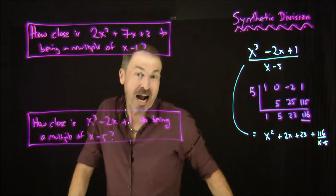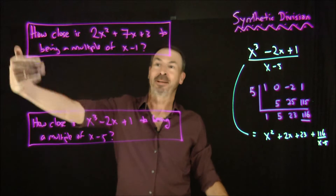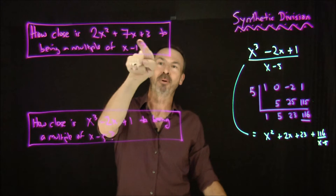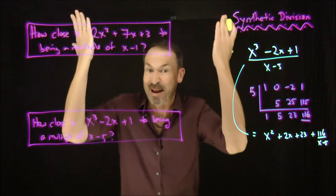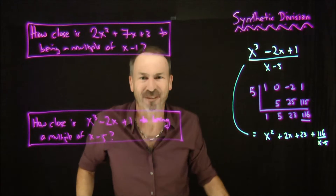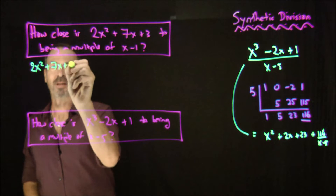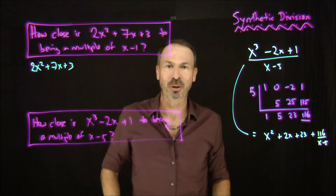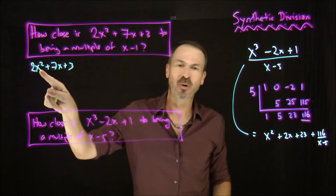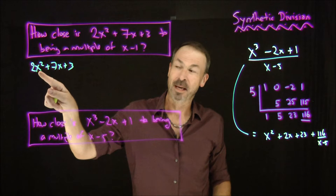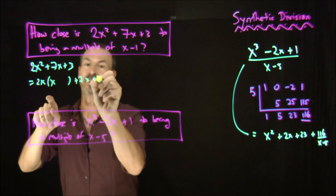I don't see these questions presented this way in a textbook at all — I think they should be. Going on the theme of integer rectangles, here's question one: how close is the polynomial 2x² + 7x + 3 to being a multiple of (x minus 1)? It probably isn't because I just made it up, but how close is it? Let's engage in the wishful thinking we played with before. I've got 2x² + 7x + 3. I want multiples of (x minus 1). I look at 2x² and say it's not a multiple of (x minus 1), but at least it's a multiple of x.